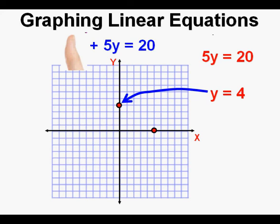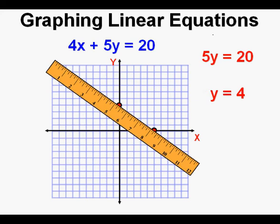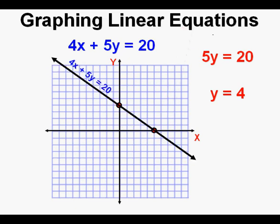Now we're ready to graph the equation by drawing a line through the two points. We line up a ruler or another straight edge to help us draw a reasonably straight line. And with that ruler in place, we can draw a pretty accurate line. This is the graph of the equation 4x plus 5y equals 20.